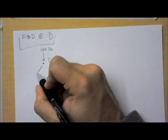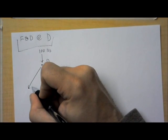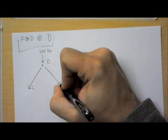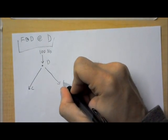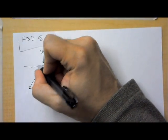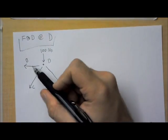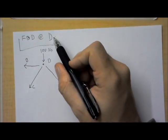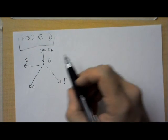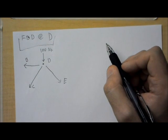We have a force vector going over here towards C, a force vector going over here towards E, and a force vector going over here towards B. Remember, we draw them going away from the point of our free body diagram. All right. And we know some of those.